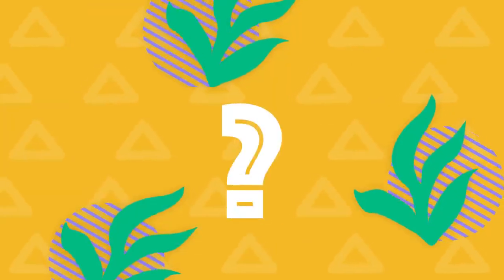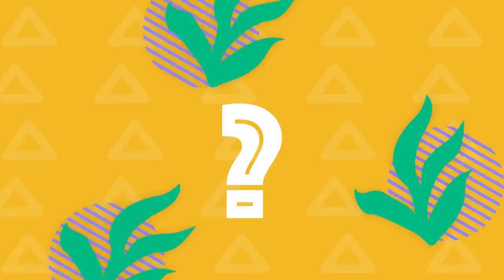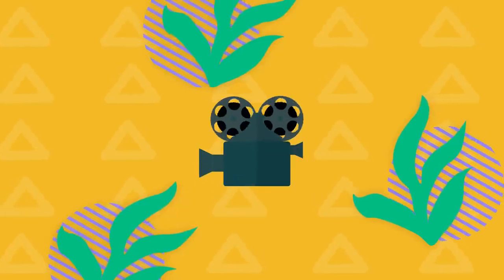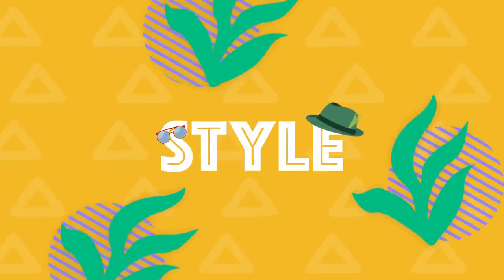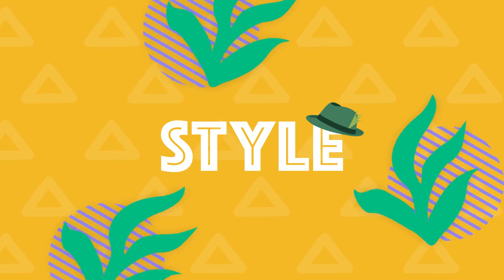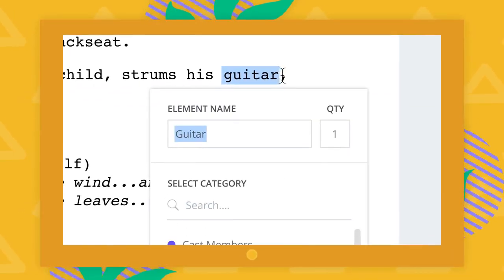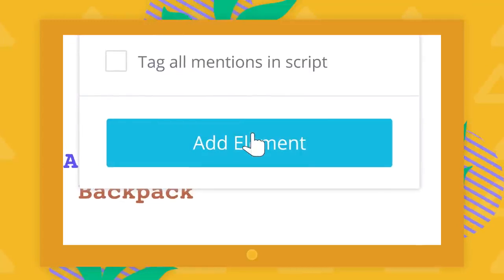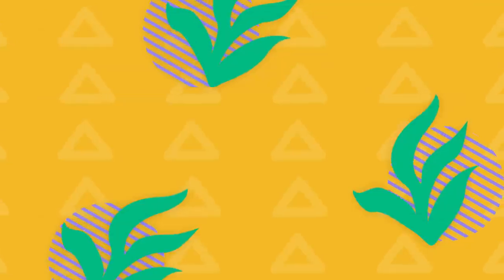But why do we even need to format? We format because screenplays are written to be produced. Formatting correctly isn't stylistic — it's necessary for first ADs to break down your script into characters, props, costumes, etc., in software like StudioBinder.